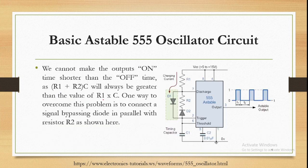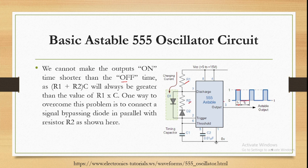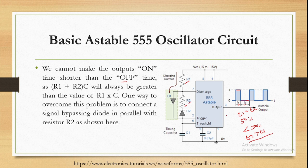We cannot make the output on-time shorter than the off-time. T1 depends on R1 and R2 while T2 depends only on R2. For 50 percent duty cycle, T1 must equal T2. For less than 50 percent, T2 must be greater than T1 — but this is not possible since the capacitor charges through R1 and R2 yet discharges through R2 only.